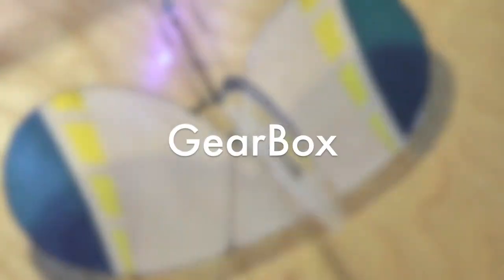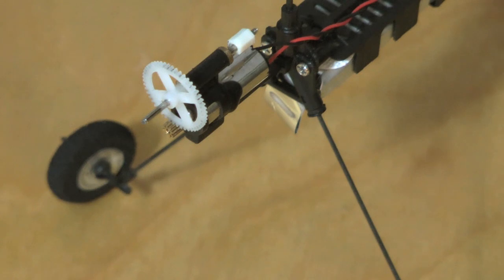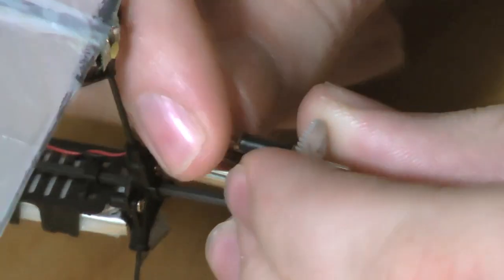Let's move on to the gearbox assembly. I noticed that everything was fine for the gearbox except for the motor shaft, so all I did was unscrew the motor shaft.